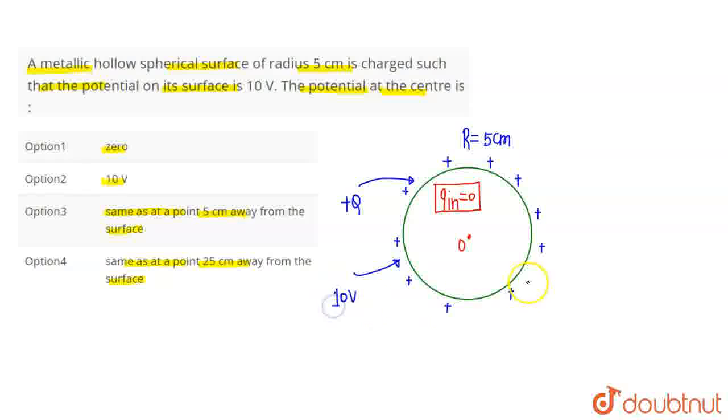When we say the surface potential is 10 volts, it means that the entire surface is an equipotential surface — the potential is 10 volts everywhere on the surface.